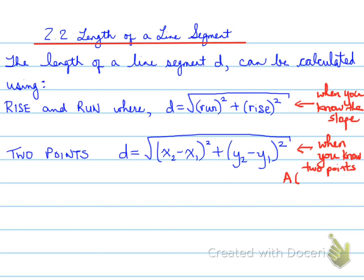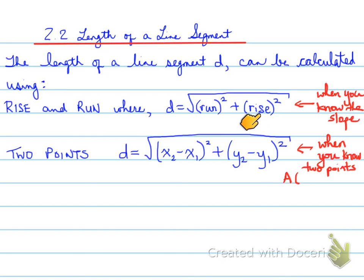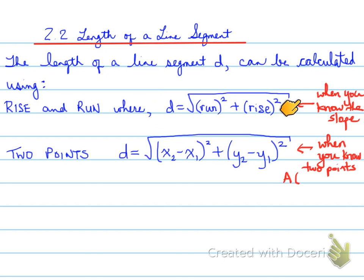Something really important to note: the rise-and-run formula is really tricky. It can only be used when you know that the rise and run have not been simplified. With slope, it could be any possible combination of values, and when you reduce rise and run, it will actually affect the distance as well. So this formula is not always a good representation — it only works some of the time.